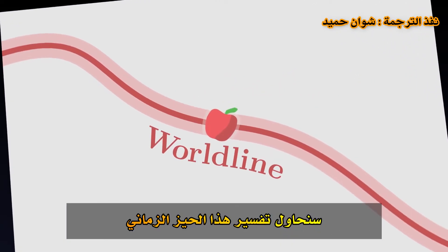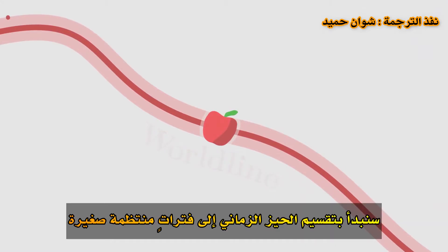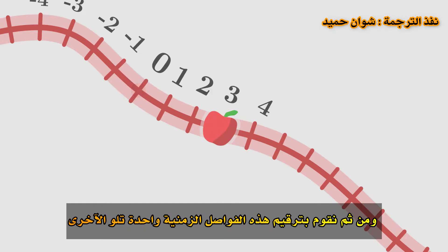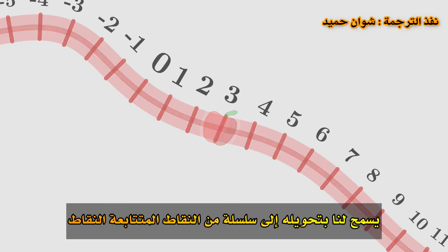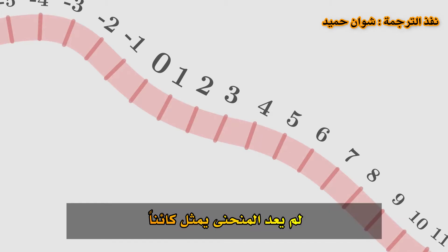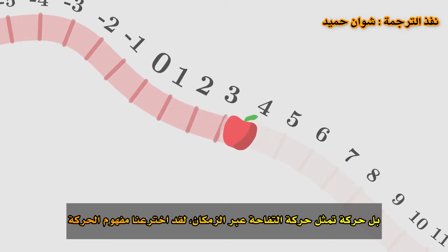We will try to interpret this world line. To start off with, we slice the world line into small, regular intervals. Choosing one point as the origin, we number these intervals one by one. In this way, we provide the curve with a graduation, which allows us to transform it into a series of consecutive points. These points can be interpreted as a trajectory. The curve is no longer an object, but a movement — it represents the movement of the apple through space-time. We have invented the concept of motion.